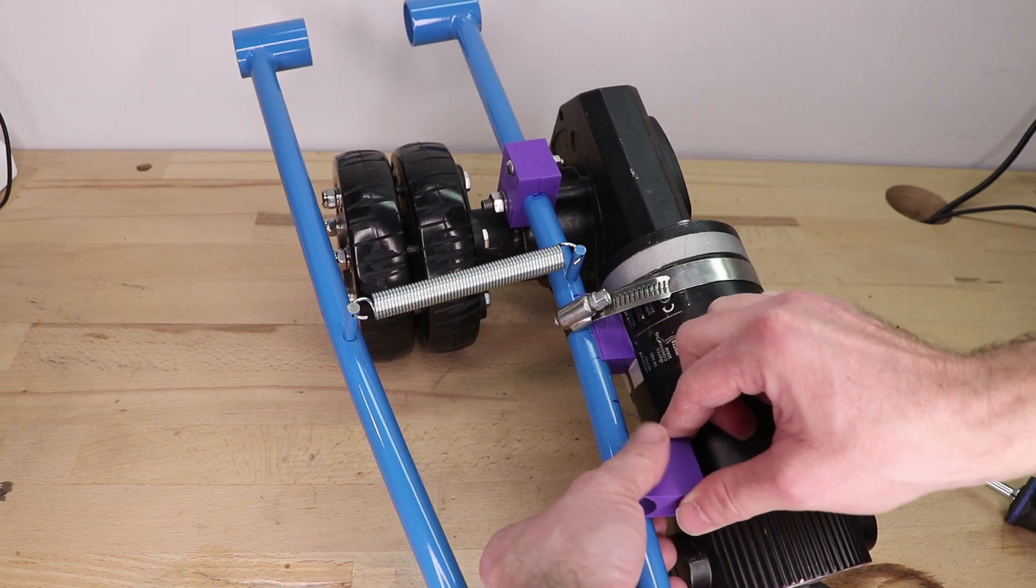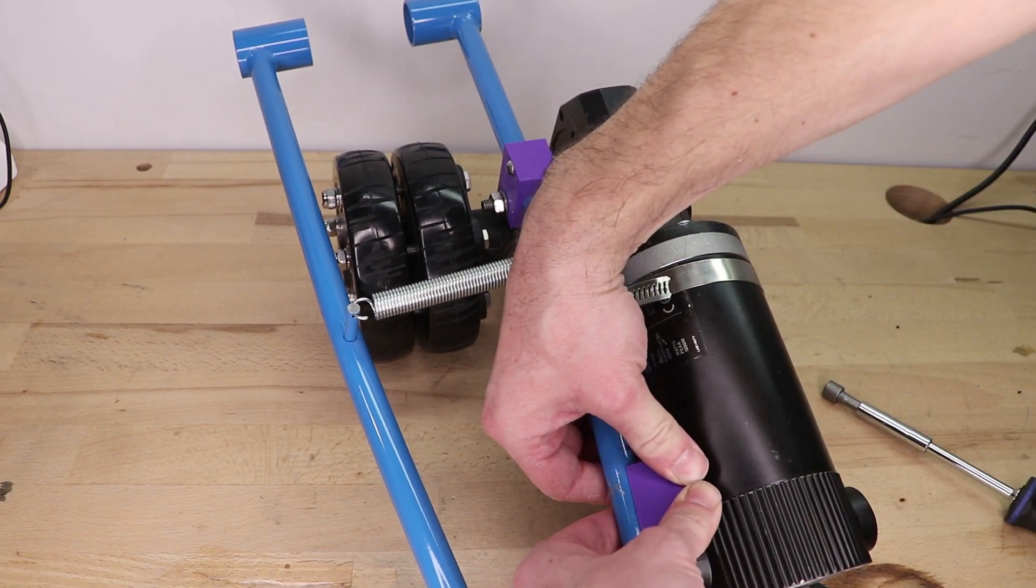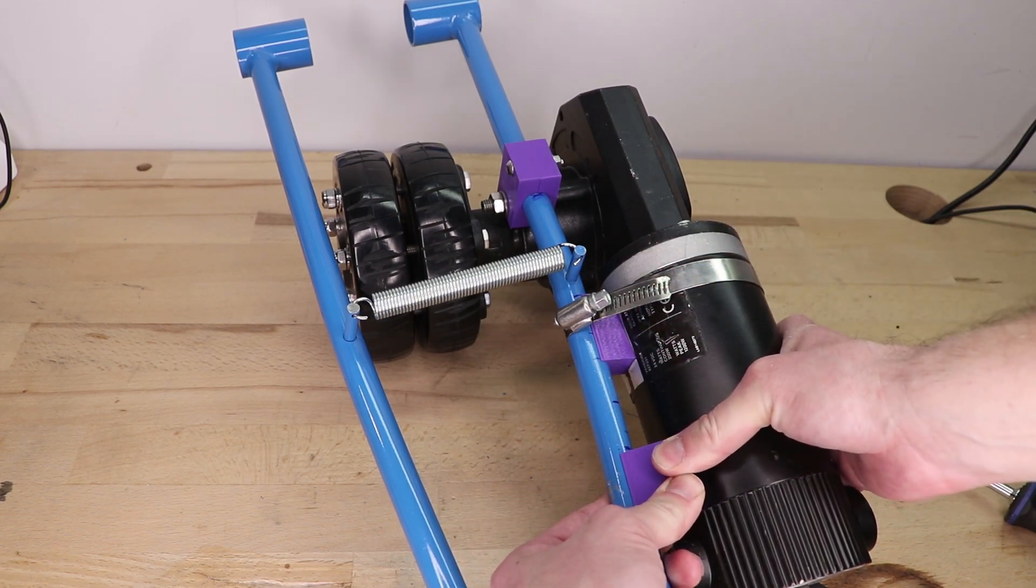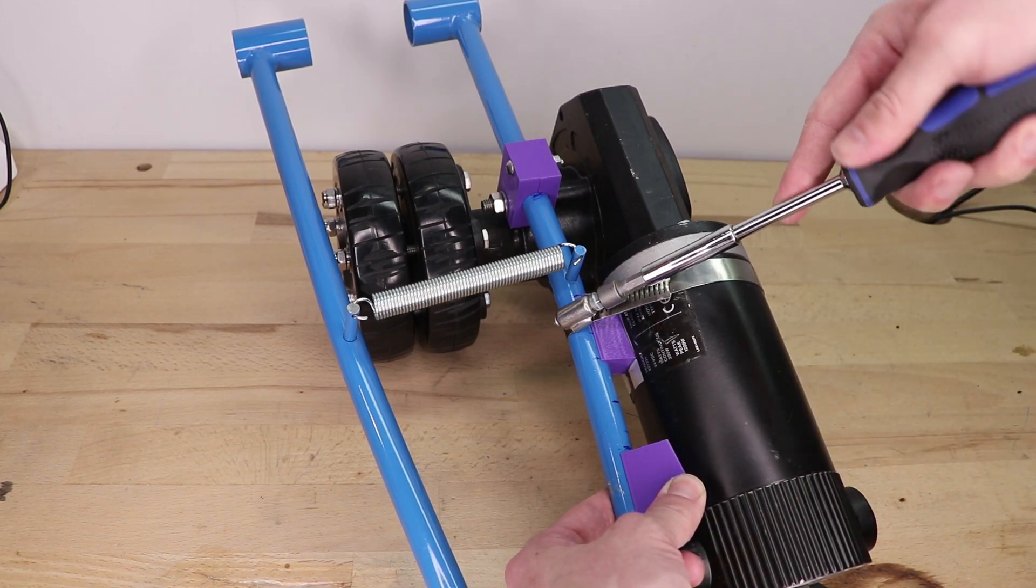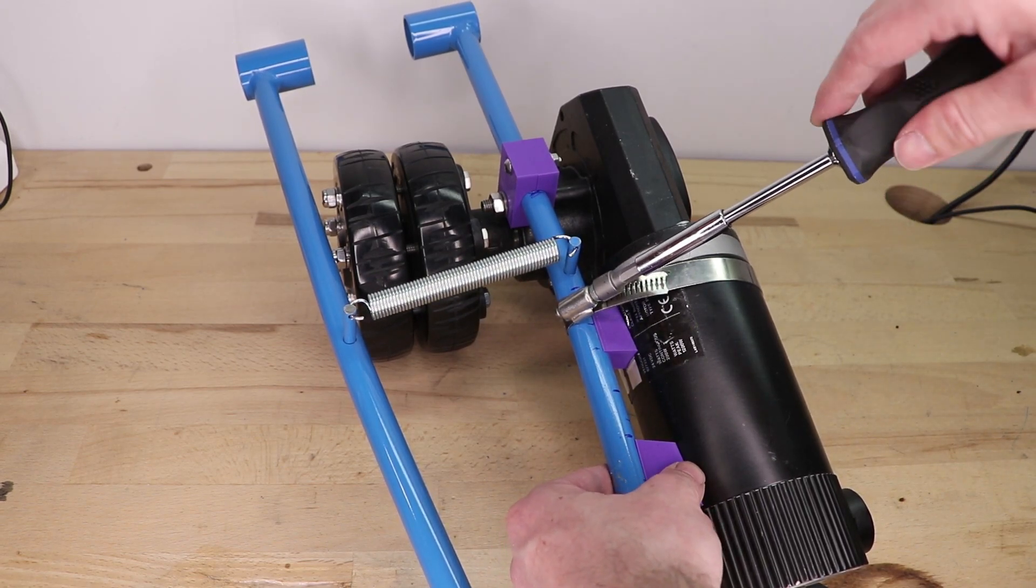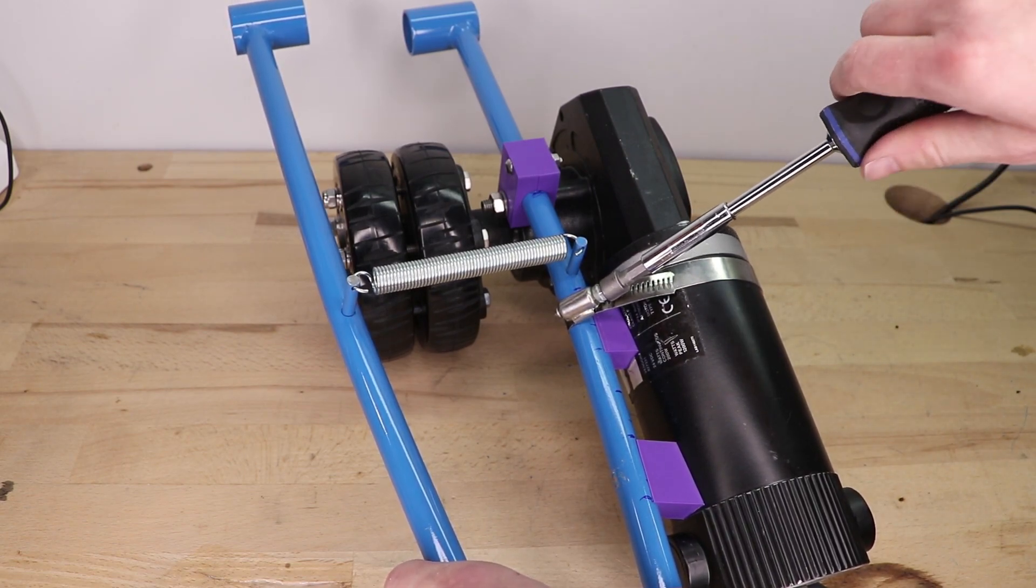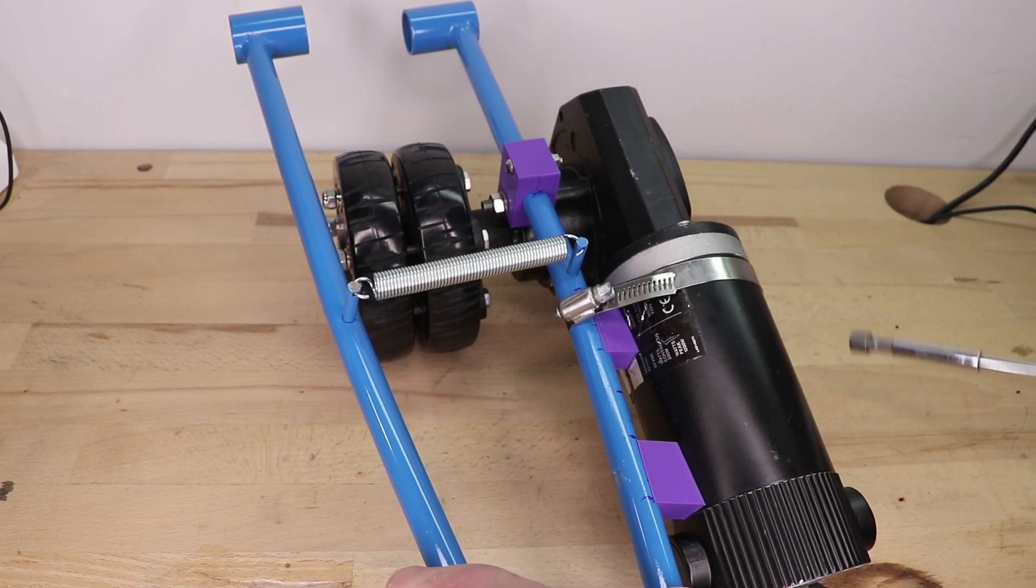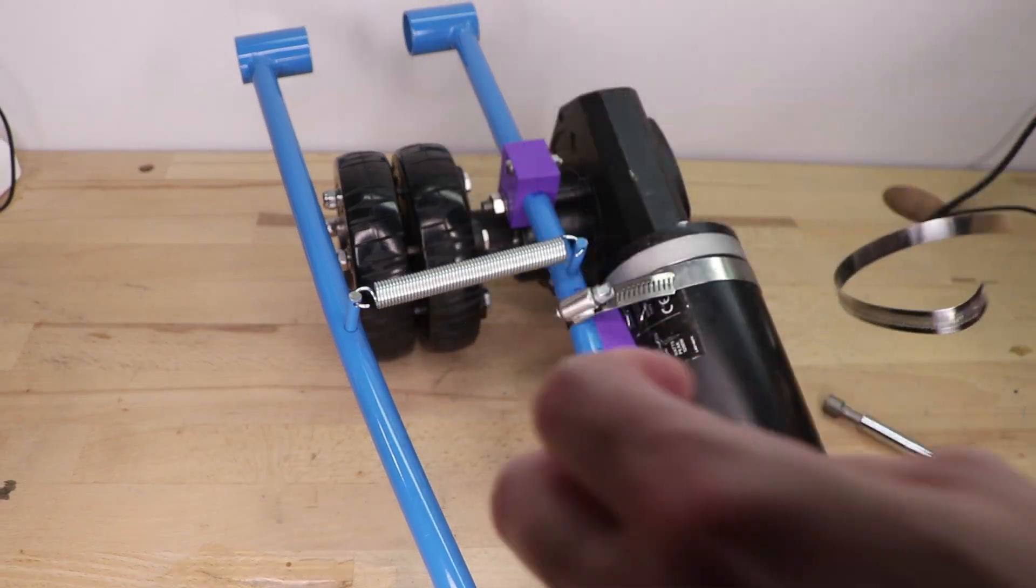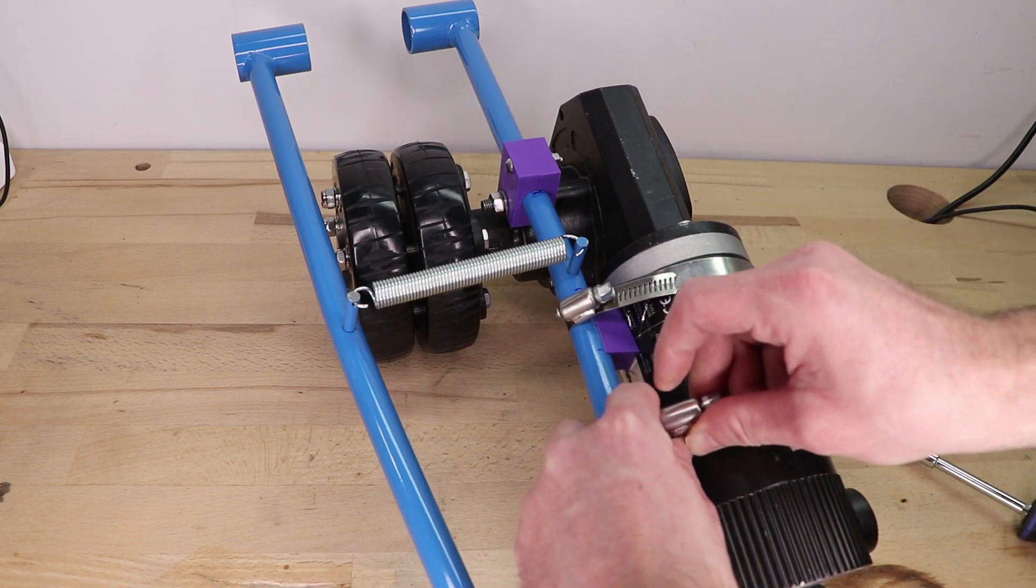Then I tried to use the second spacer but it was too tight so I had to loosen the hose clamp a little bit to make it fit. Then I used the second hose clamp to mount this as well.